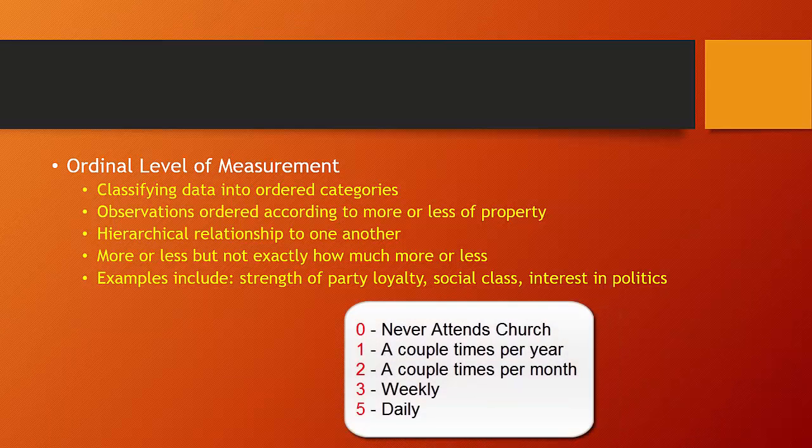Imagine a variable, church attendance, that goes from zero, never attends church, to one, attends church a couple times a year, two, a couple times a month, three, weekly, four, daily, or some such variable. Then we can understand that we're increasing in the amount of the property that we're observing, how frequently someone attends church, but we also understand that we don't have a precise measure. We can't subtract daily from a couple times a month, for example. It doesn't make sense to perform a mathematical operation.